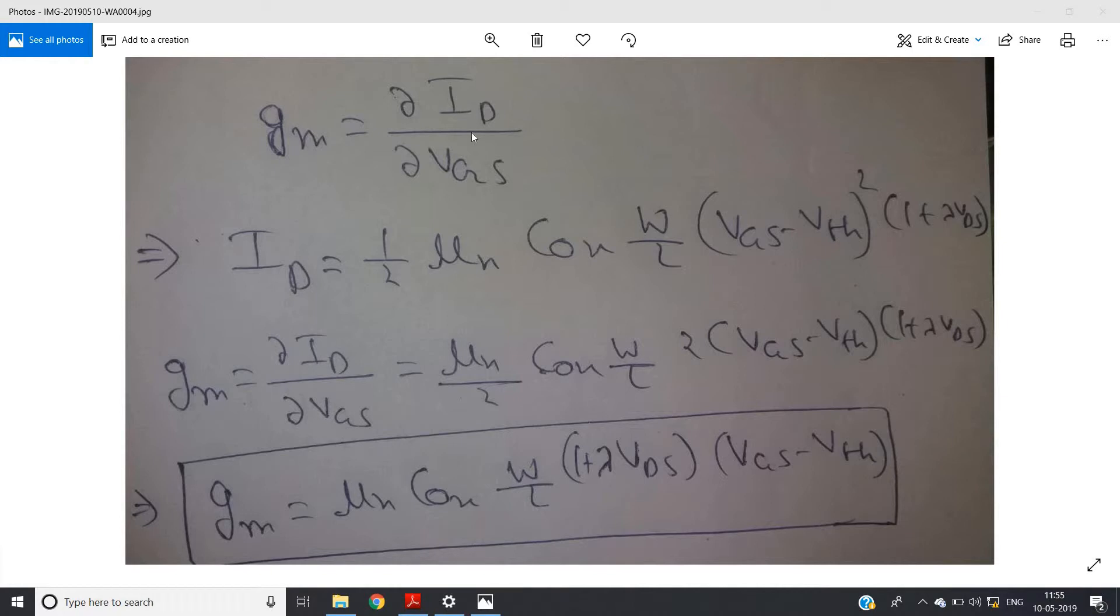Whatever expression you will get for gm will be basically MOSFET transconductance including channel length modulation. So basically, you know that ID = (1/2) × μn × Cox × (W/L)